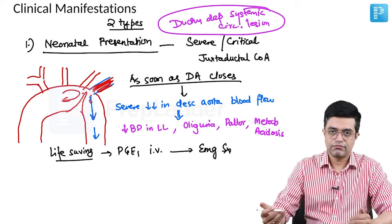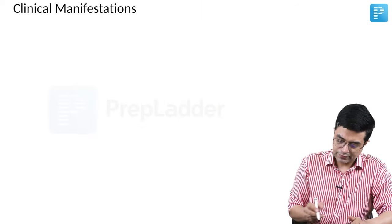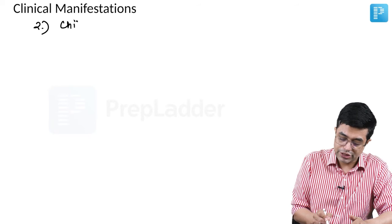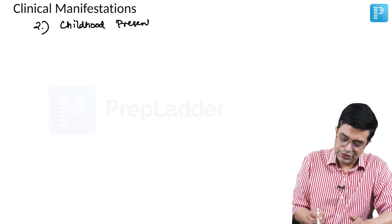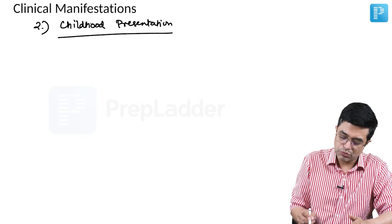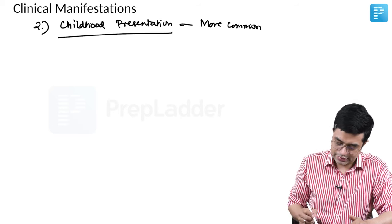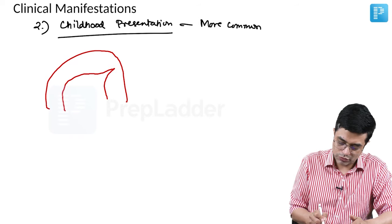The second presentation is the relatively common form, what you call the late childhood presentation. Childhood presentation is the more common variant. Now what happens in these patients is that the narrowing is there, but the narrowing is not severe. There is narrowing, but some amount of blood is still able to reach the descending aorta.